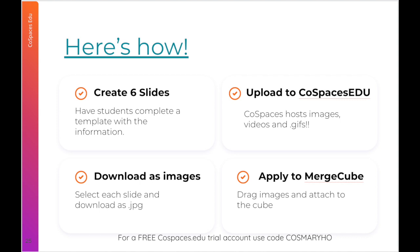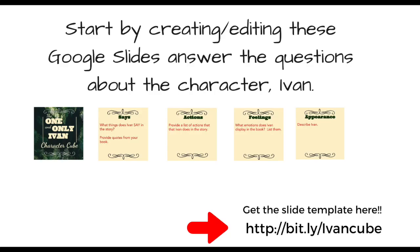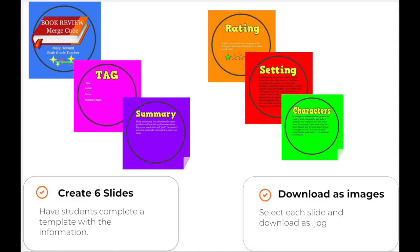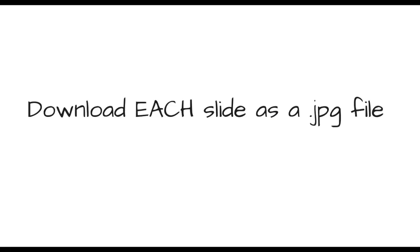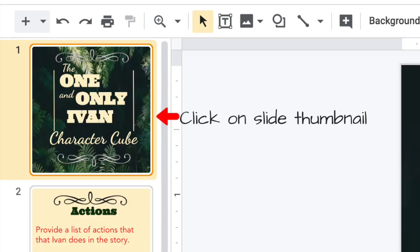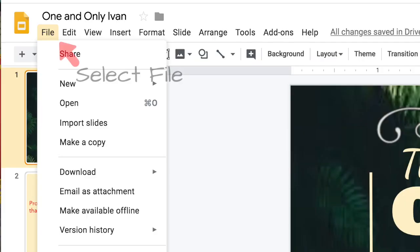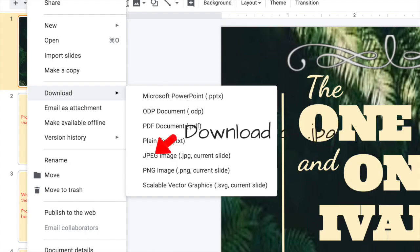The steps in the process are here, but I'm going to take you through them one step at a time as we create our One and Only Ivan cube. To start your cube, you're going to want to create or edit these Google slides and answer the questions about the story. The slides need to be squared. I typically create mine to be 5 inches by 5 inches. To be honest, your slides don't have to be about the One and Only Ivan. They can be about just about any topic. You'll then download each slide as a JPEG file. Click on the slide thumbnail, then click file and download as JPEG. Do this for each slide in the slide deck.